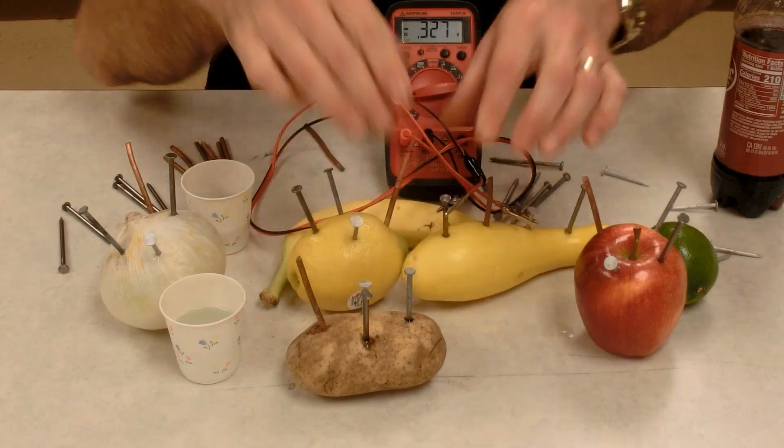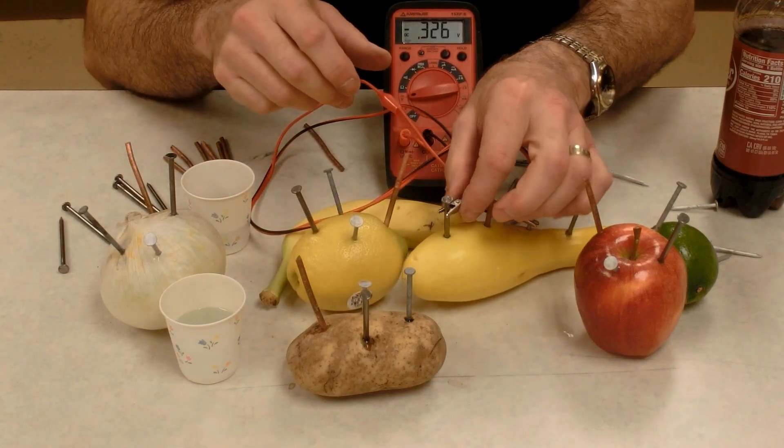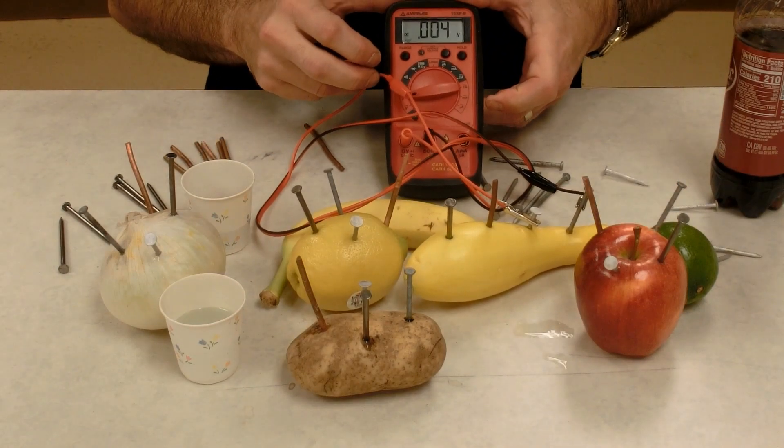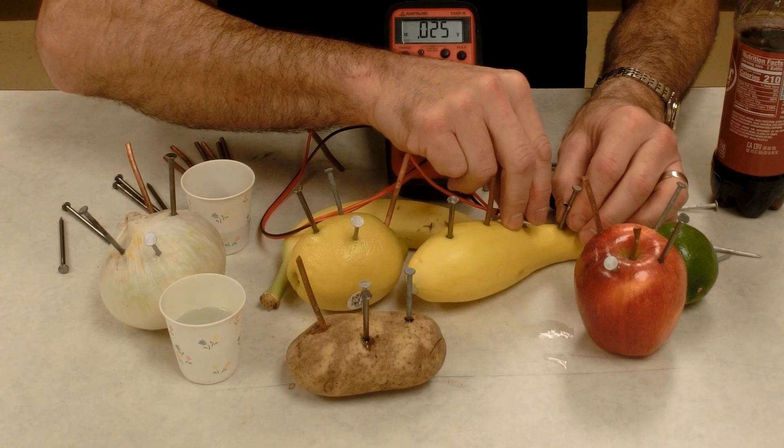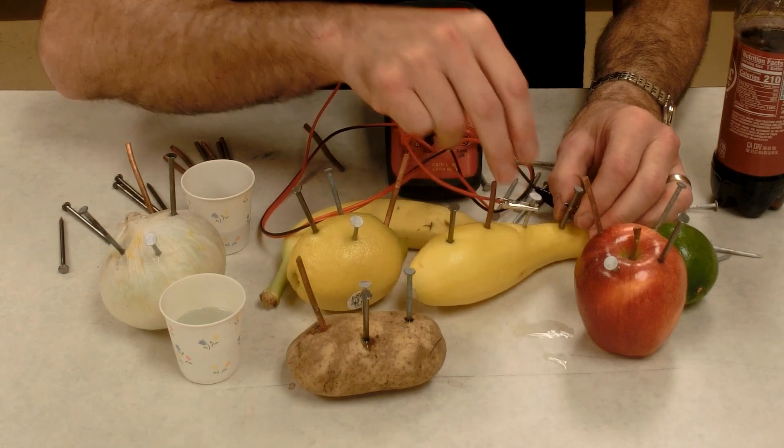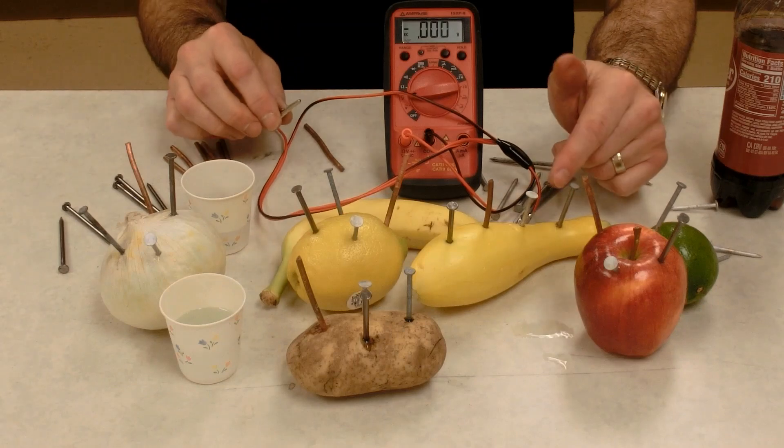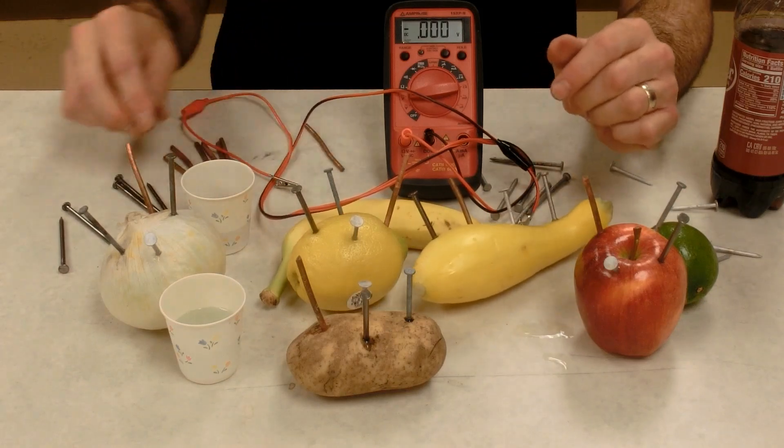Aluminum and steel, 0.3 volts. Aluminum and zinc, not a good connection, 0.18 volts. So again, the copper and zinc gave us the highest voltage.